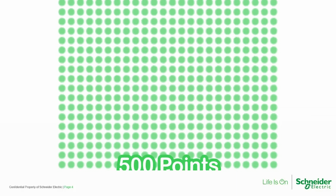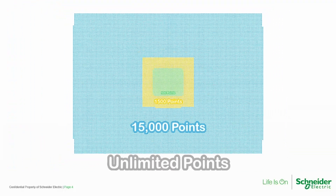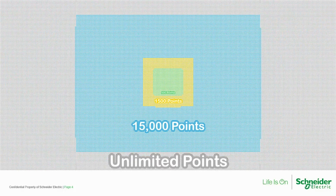The licenses only have a few tiers to choose from. You may have a license with 500, 1,500, 15,000, and unlimited points. As you can see, it doesn't take many high-end devices to pass 15,000 tags, so most projects end up with unlimited tags.